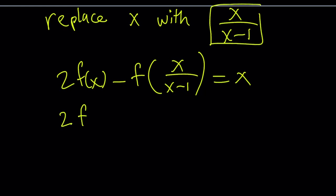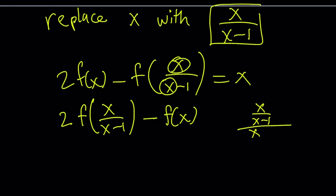We're going to get 2 times f of x over x minus 1. And when we do it here, we're going to get f of x. We just saw that. But if you wanted to test it out, I can show you real quick.